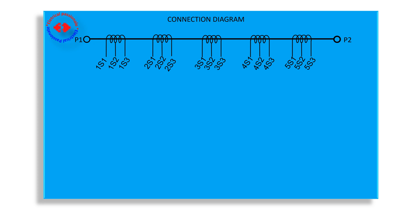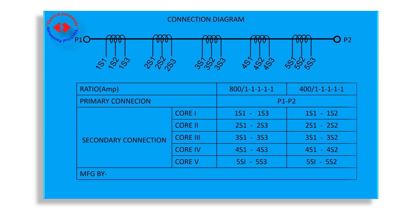In the nameplate, we see connection diagram where P1 and P2 is primary of the CT. And then, in secondary, there are 5 different cores of the CT. In the table, we have two CT ratios. One is 800 by 1-1-1-1-1 ampere. And another is 400 by 1-1-1-1-1 ampere. We can use both ratios, depending on the primary current flow in the CT.